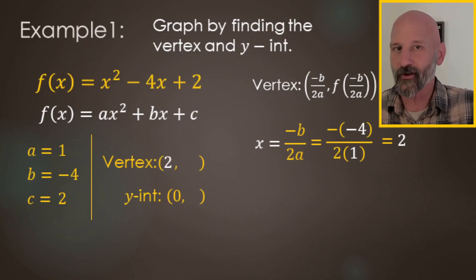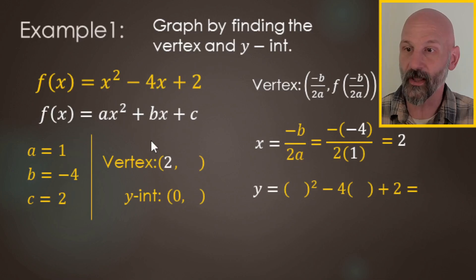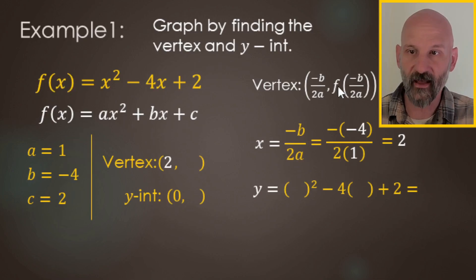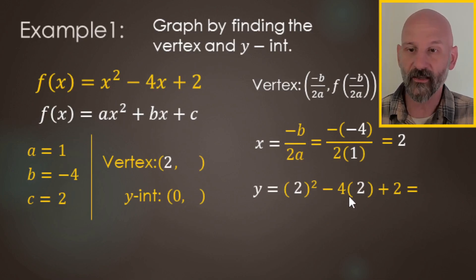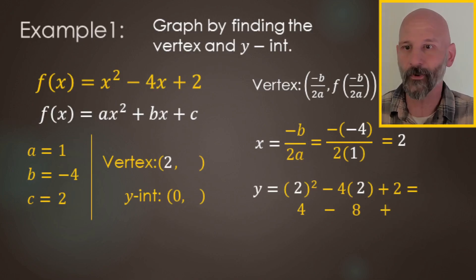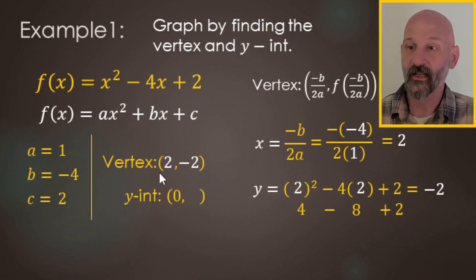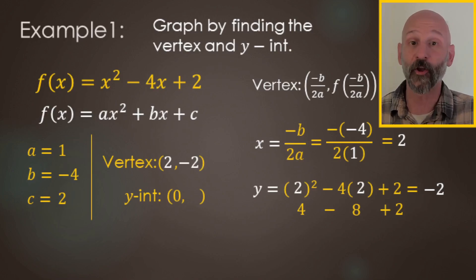Now that we have x = 2, we plug it back in to find the y value: f(2) = 2² − 4(2) + 2. That's 4 − 8 + 2. We did exponents first, then multiplication, now addition and subtraction: 4 + 2 = 6, and 6 − 8 = negative 2. So the vertex is the ordered pair (2, −2).